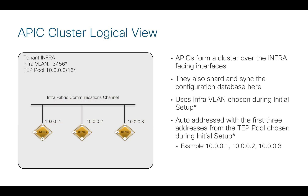If we take a deeper look into the logical view of this APIC cluster, the three APICs do form a cluster, and they do it over those infra-facing 10-gig interfaces. This is where they build the configuration database, shard it, and synchronize across all three of those controllers. It also does this over a special VLAN that we call the infra VLAN.